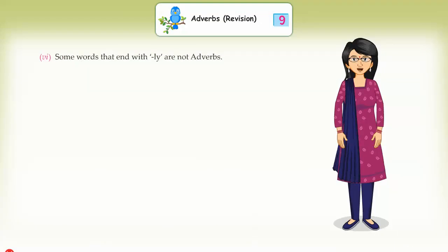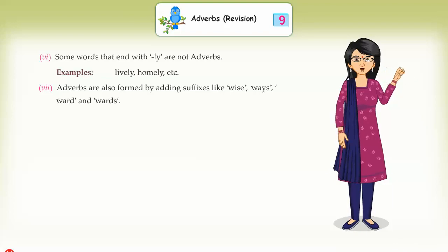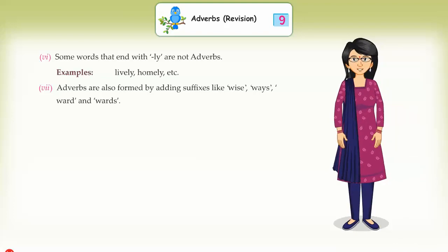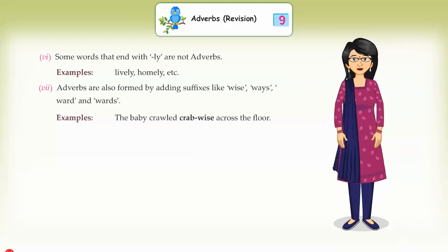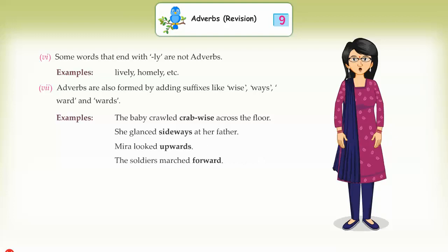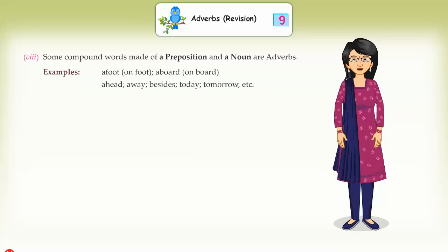(6) Some words that end with '-ly' are not adverbs. Examples: lively, homely, etc. (7) Adverbs are also formed by adding suffixes like '-wise', '-ways', '-ward', and '-wards'. Examples: The baby crawled crab-wise across the floor. She glanced sideways at her father. Mira looked upwards. The soldier marched forward. (8) Some compound words made of a preposition and a noun are adverbs. Examples: afoot, aboard, ahead, away, besides, today, tomorrow, etc.